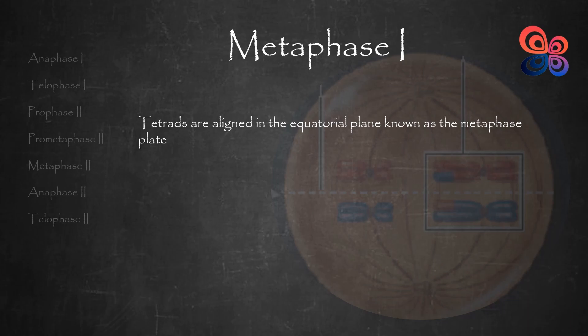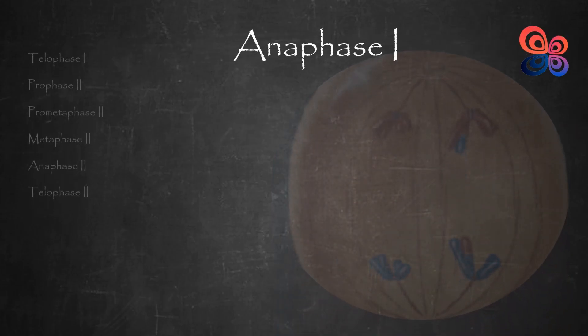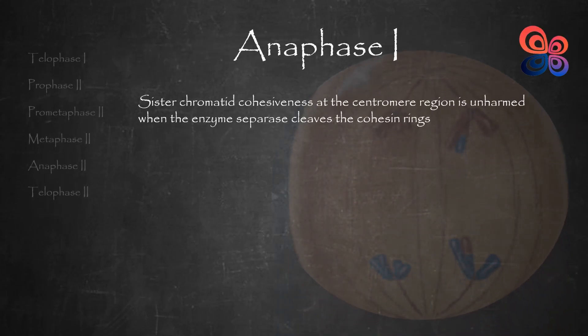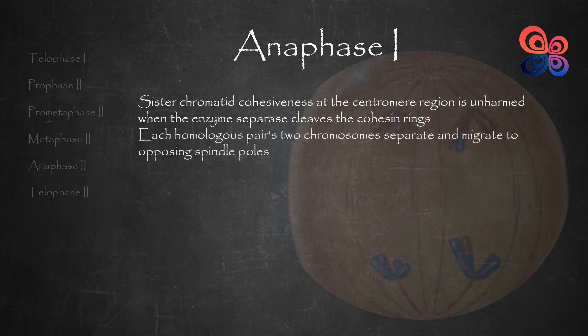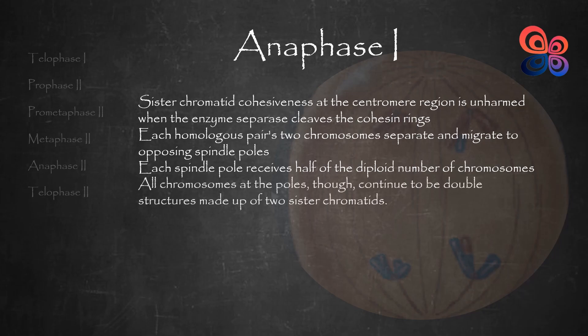This procedure takes place in metaphase 1. Anaphase 1 follows. This phase is initiated when the enzyme separase cleaves the cohesin rings just along the arms of the sister chromatids, while sister chromatid cohesiveness at the centromere region remains unharmed. Each homologous pair's two chromosomes separate and migrate to opposing spindle poles. Each spindle pole receives half of the diploid number of chromosomes as a result. All chromosomes at the poles, though, continue to be double structures made up of two sister chromatids.